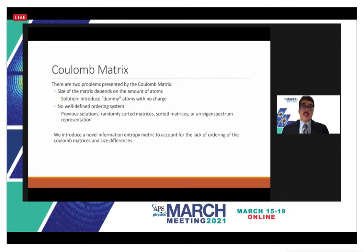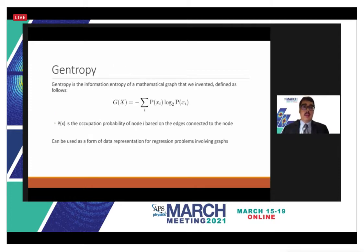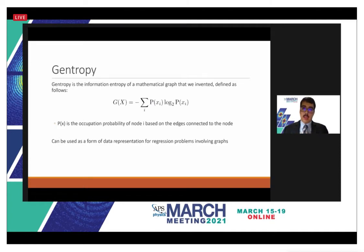We introduce a novel information entropy metric called gentropy to solve the ordering and size-standardization problems. Gentropy is the information entropy of a mathematical graph. The probability in this definition is the occupation probability of a node — based on how many edges are connected to that node and the weights of those connections, relative to all edges in the entire graph.